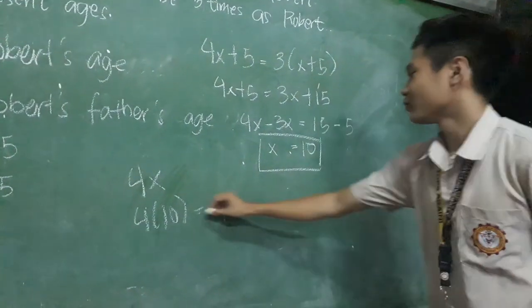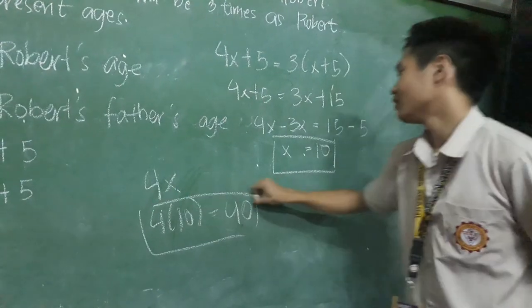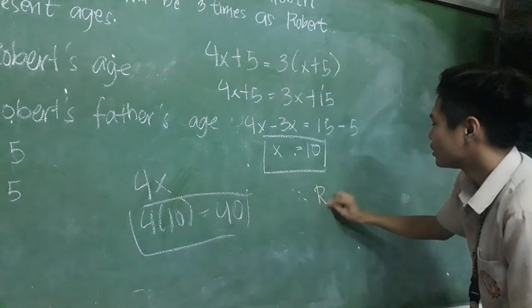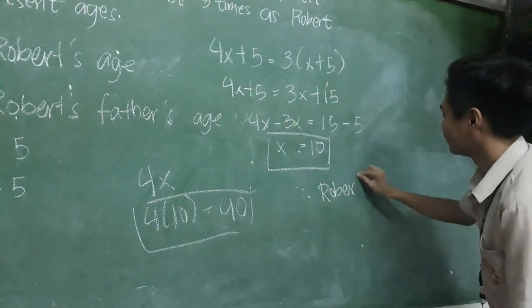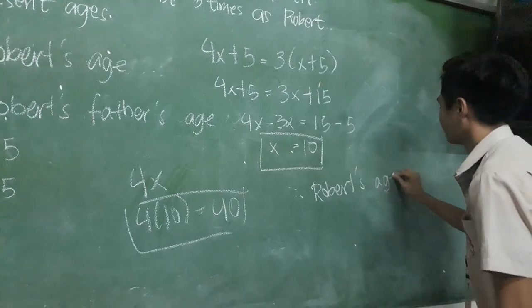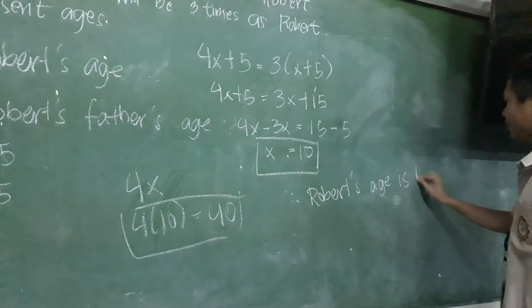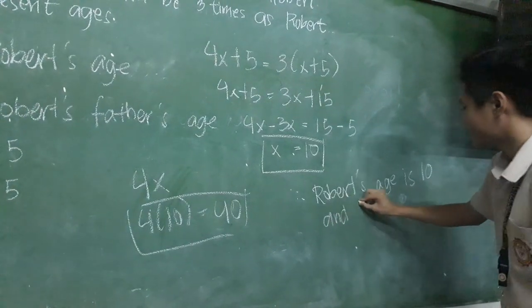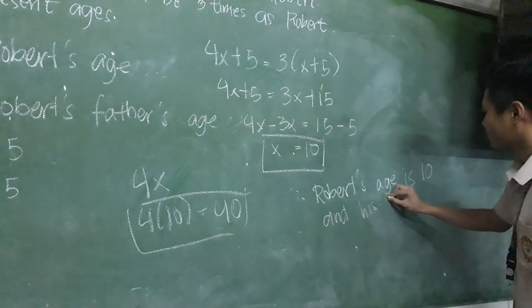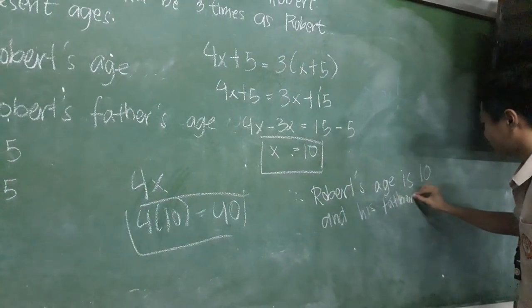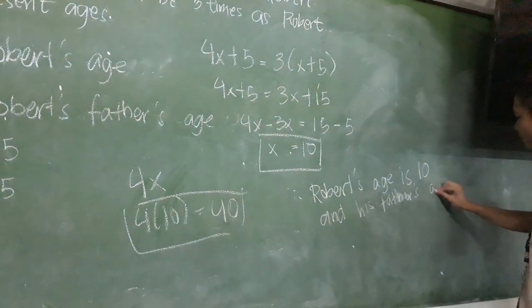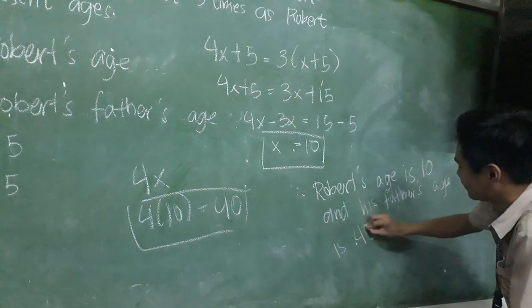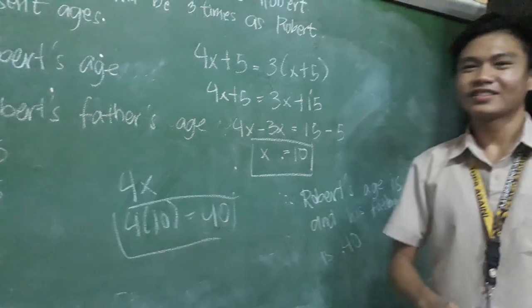So now we can write the conclusion. Robert's age is 10, and his father's age is 40. That's all. Thank you.